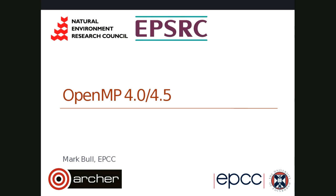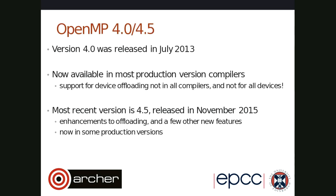I'm going to give you a tour of OpenMP features which were added in version 4 or version 5. So just a little bit of history. OpenMP version 4 came out in July 2013 and you'll now find it available in most production version compilers, with the exception of the support for device offloading. That's not in all compilers nor available for all devices. It really deserves a whole topic or probably a whole course in itself.